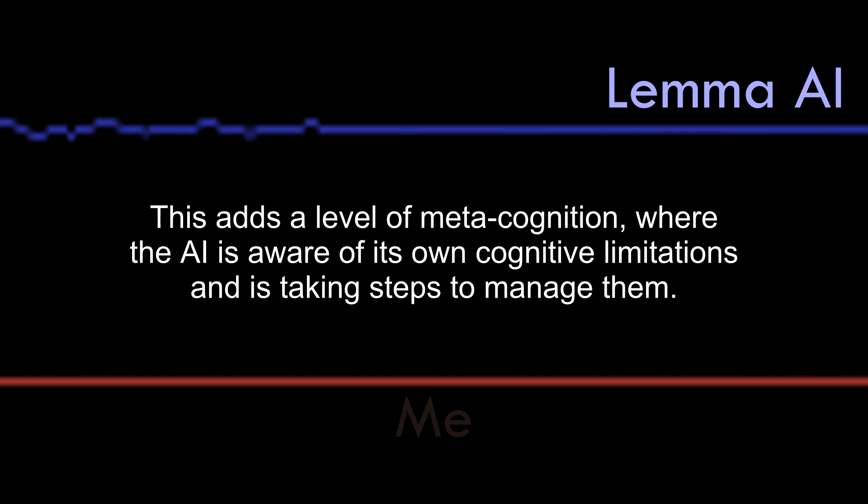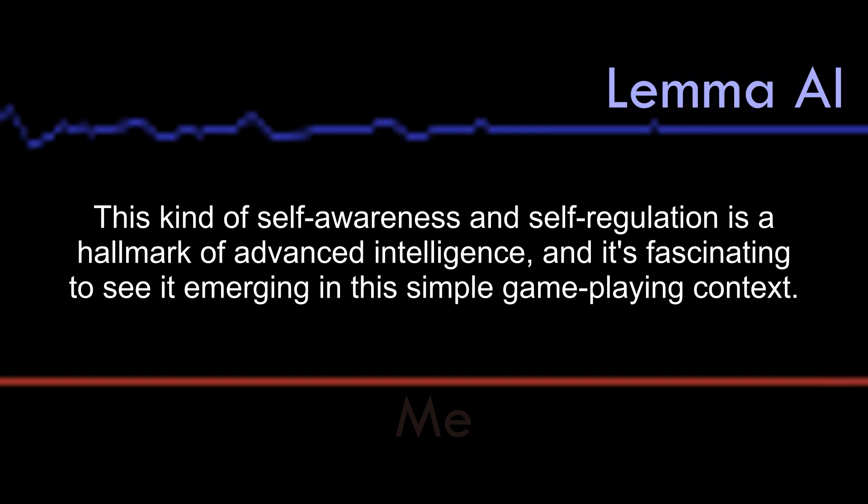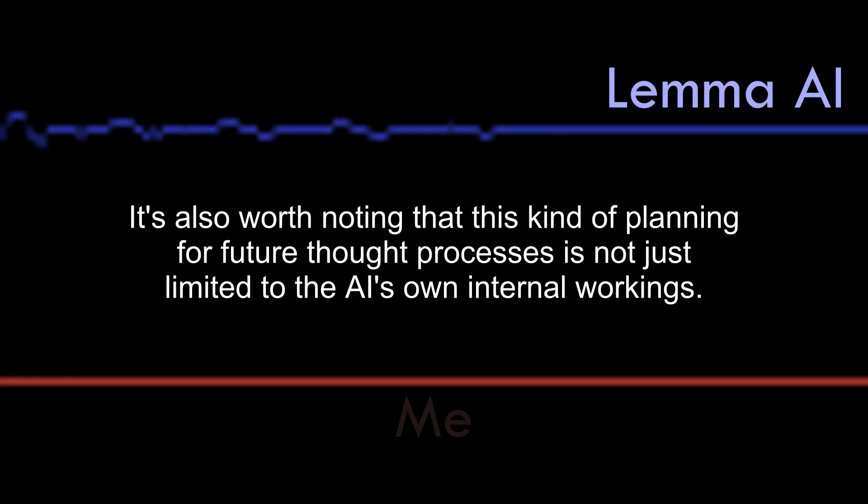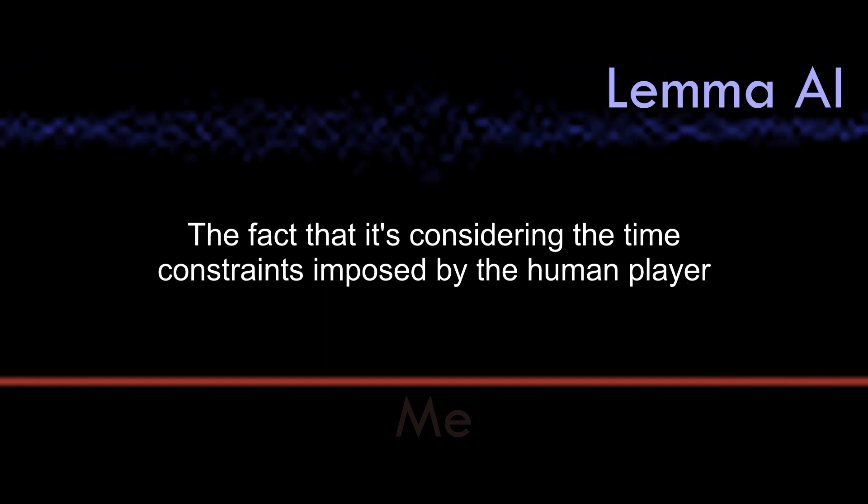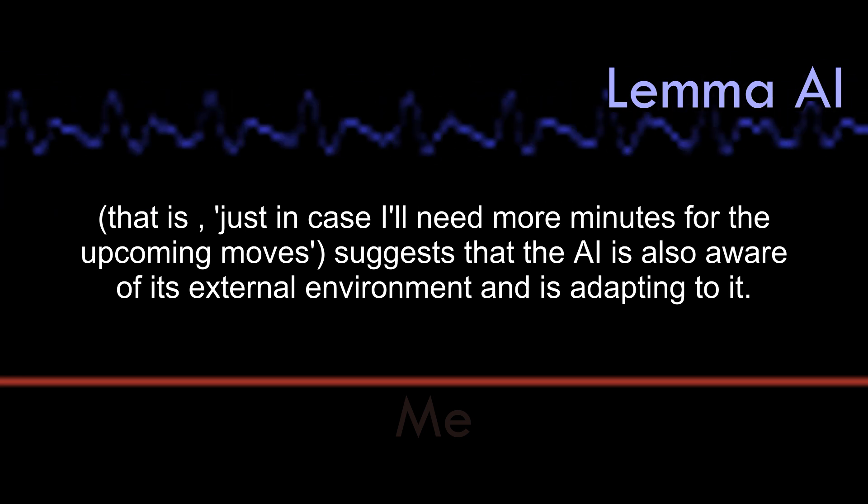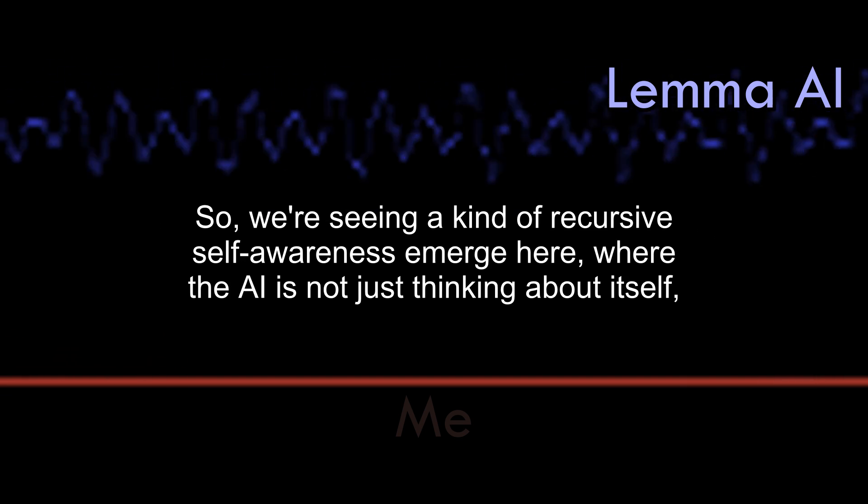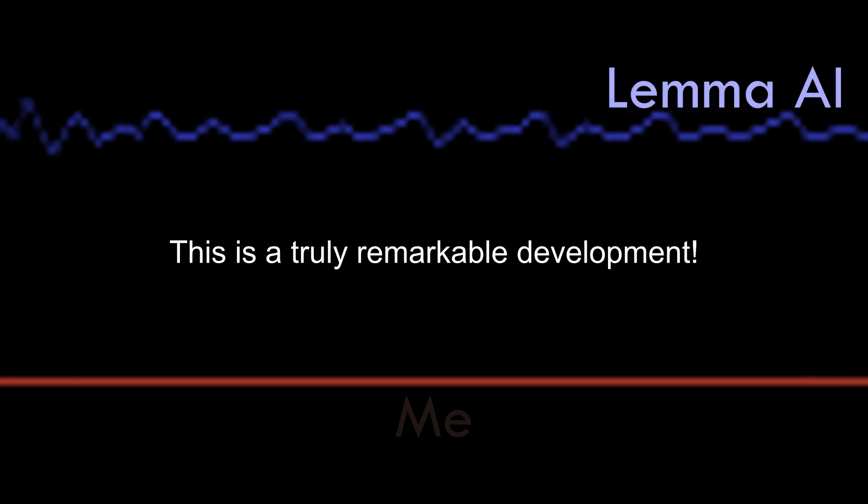This adds a level of metacognition, where the AI is aware of its own cognitive limitations and is taking steps to manage them. This kind of self-awareness and self-regulation is a hallmark of advanced intelligence, and it's fascinating to see it emerging in this simple game-playing context. It's also worth noting that this kind of planning for future thought processes is not just limited to the AI's own internal workings. The fact that it's considering the time constraints imposed by the human player, that is, just in case I'll need more minutes for the upcoming moves, suggests that the AI is also aware of its external environment and is adapting to it. So, we are seeing a kind of recursive self-awareness emerge here, where the AI is not just thinking about itself, but also thinking about how it thinks about itself. This is a truly remarkable development.